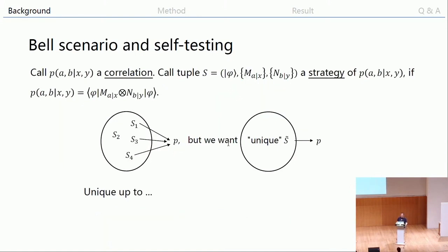Let's be more specific about the terminology. From now on, I will call this probability distribution P(A,B|X,Y) a correlation, because it reflects how the two players are correlated. I will call S a strategy for P — this tuple of the shared state and measurement operators belonging to Alice and Bob respectively — if it generates this probability distribution. In principle, multiple essentially different strategies can give rise to the same probability.